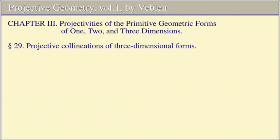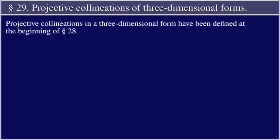Section 29: Projective Collineations of Three-Dimensional Forms. Projective collineations in a three-dimensional form have been defined at the beginning of Section 28.